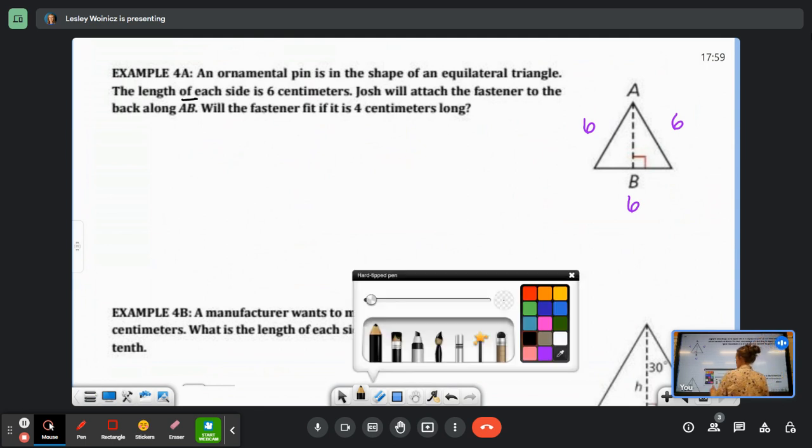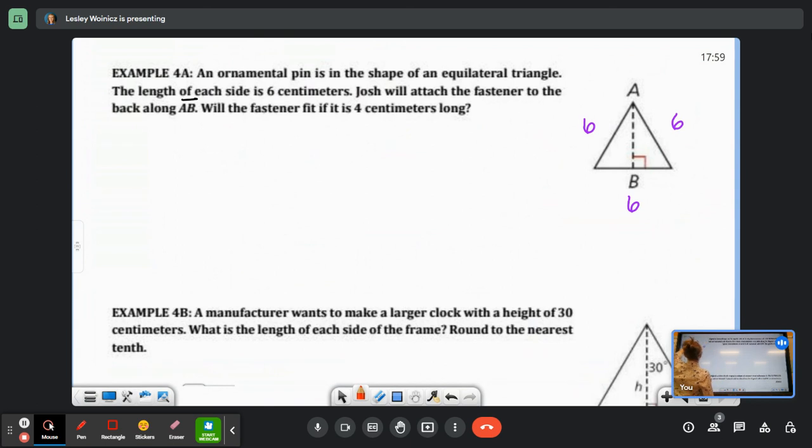Will the fastener fit if it is 4 centimeters long? We obviously don't want the fastener to be sticking out, so we don't want it to be too big. So we really need to find this side. If you look at this triangle, this little side right here is 3, because it's half of 6.